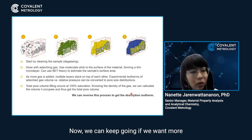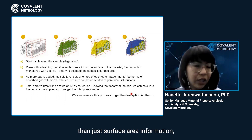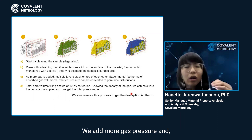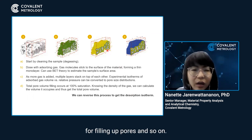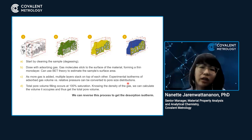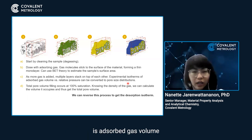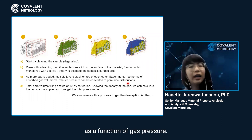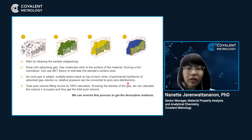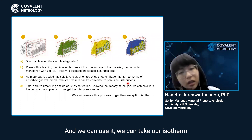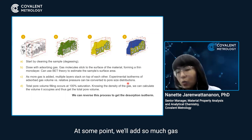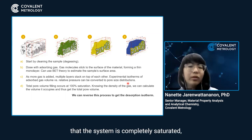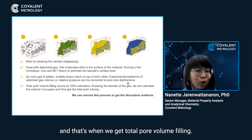We can keep going if we want more than just surface area information. By adding more gas pressure, we stack multiple layers on top of each other, filling up pores. The measurement we're taking is adsorbed gas volume as a function of gas pressure — this data is what we call an isotherm. We can take our isotherm and convert it to a pore size distribution. At some point, we'll add so much gas that the system is completely saturated, giving us total pore volume filling.